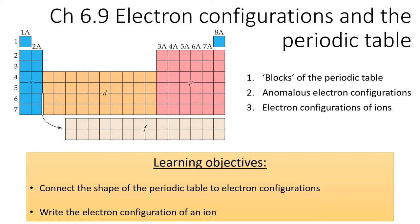This lesson builds upon the last lesson, in which we added electrons one at a time to atoms in order to write out their electron configurations.